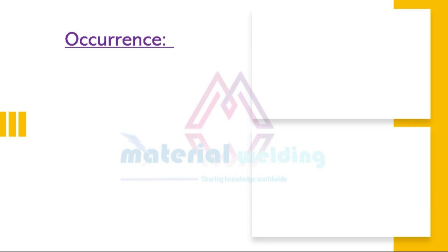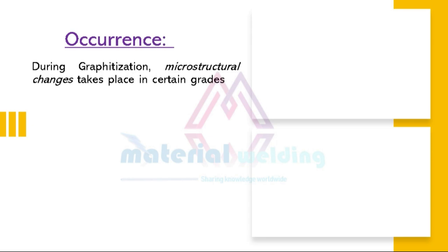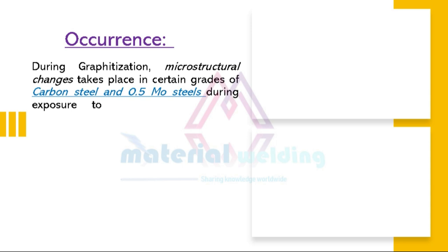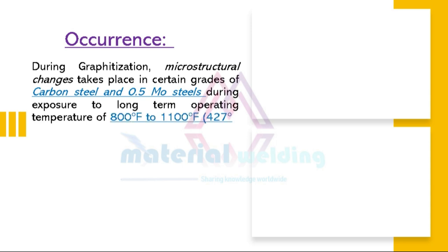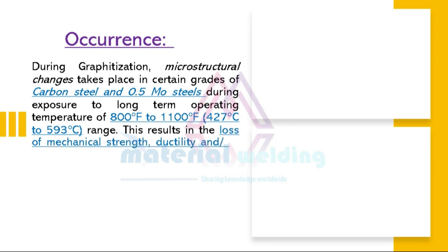So what is graphitization? Graphitization is a change in the microstructure of certain carbon steels and 0.5 moly steels. These changes take place during exposure to long-term operating temperatures in the range of 800 to 1100 degrees Fahrenheit. This results in the loss of mechanical strength, ductility, and creep resistance.